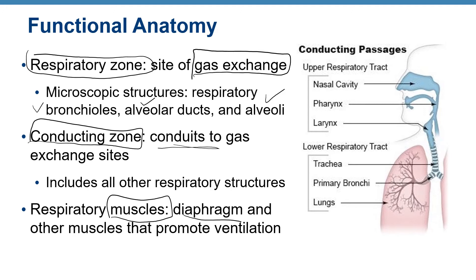The conducting zone can also be divided into the upper and lower respiratory tracts. The upper respiratory tract includes the nasal cavity, pharynx, and larynx — in everyday language, the throat and voice box. The lower respiratory tract includes the trachea, primary bronchi, and lungs.